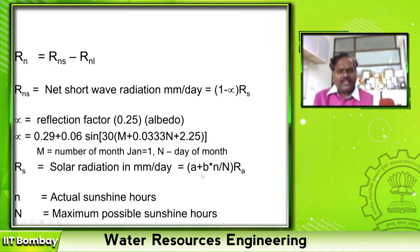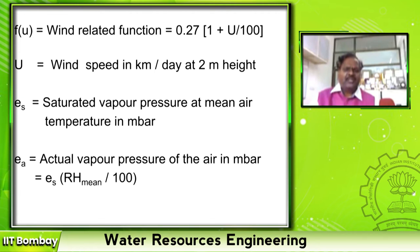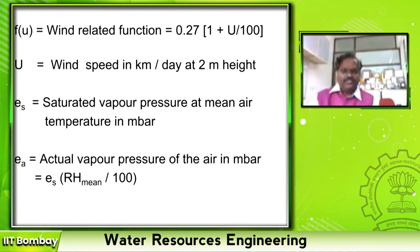Solar radiation is estimated using the RA formula, and RN net long wave radiation is a function of temperature, actual vapor pressure, and n by N. FU is wind speed, and wind speed again is in kilometers per day at 2-meter height. In the Blaney-Criddle method you use 2 meters but the unit is in meters per second; here you use it in kilometers per day, because the regression equations developed by FAO used this unit.